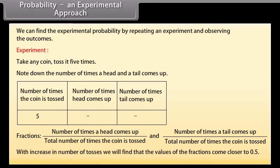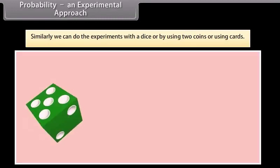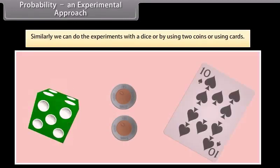As we increase the number of tosses, we will find that the values of the fractions come closer to 0.5. Similarly, we can do the experiments with the dice or by using two coins or using cards.